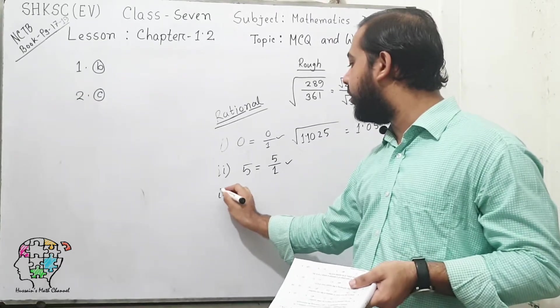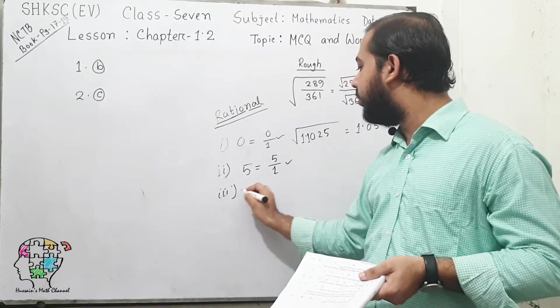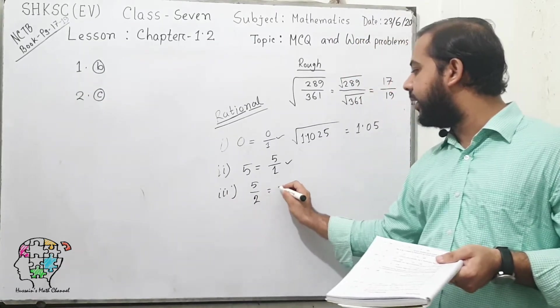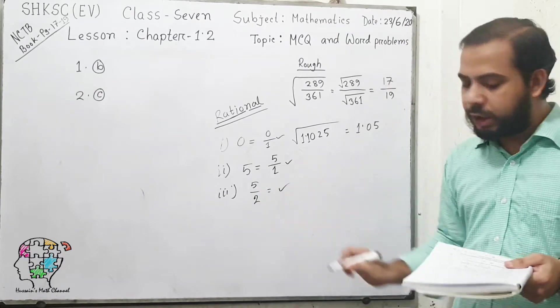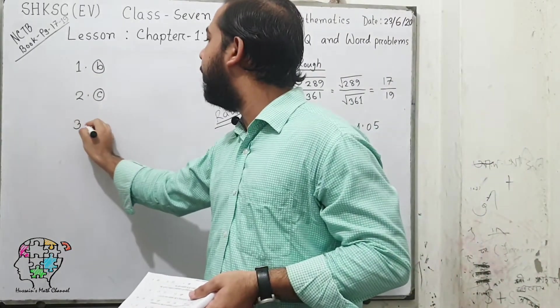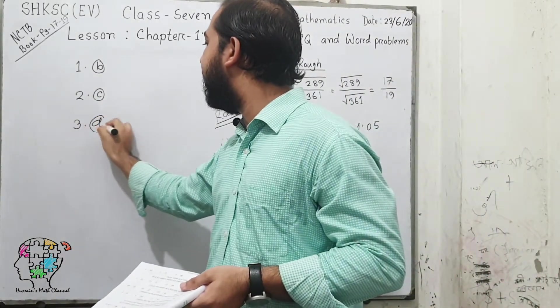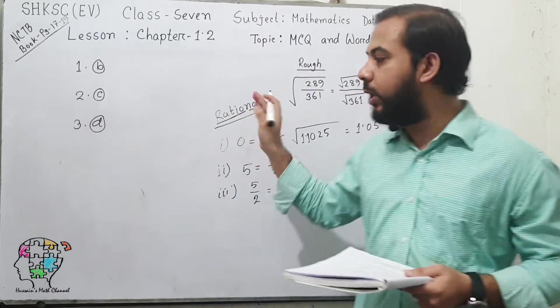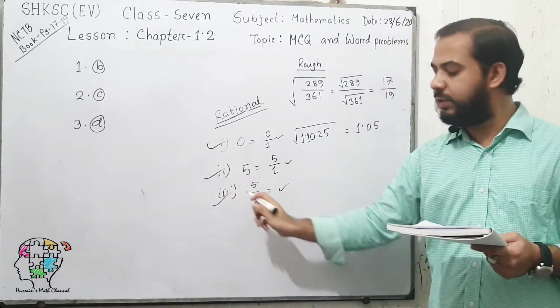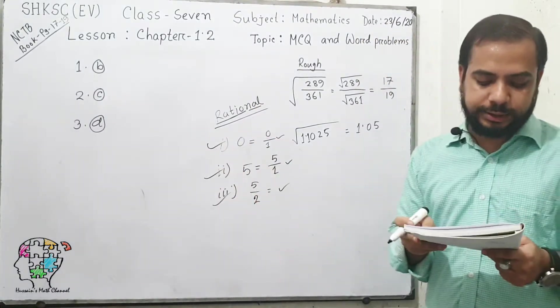And of course option number 3, 5 by 2, is also a rational number. So our answer will be option D for question number 3: all the options are rational numbers. These 3 are rational numbers.